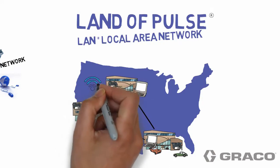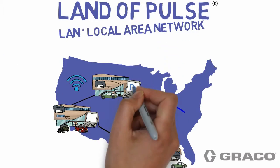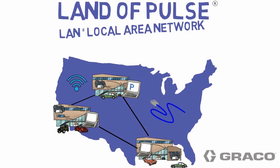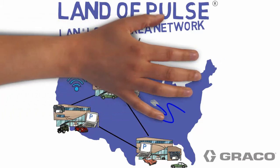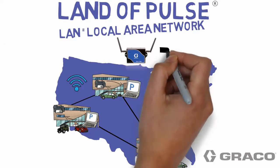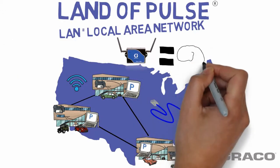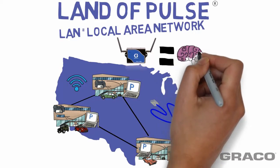Devices typically connect to the same LAN wirelessly, called Wi-Fi, or wired, called Ethernet. A LAN can have an Internet connection, but it's not required for exchange of information between devices on the network, and an Internet connection is also not required to have a website. Pulse uses a component called a hub — the brains of the Pulse system — to connect to the dealership's LAN and provide the website for Pulse on the dealership's computers.